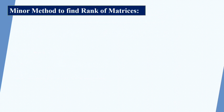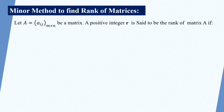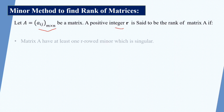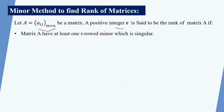Minor method to find rank of matrices: Let A = [a_ij] of order m by n be a matrix. A positive integer r is said to be the rank of matrix A if it holds the following properties. Number one: matrix A has at least one r-order minor which is non-singular.